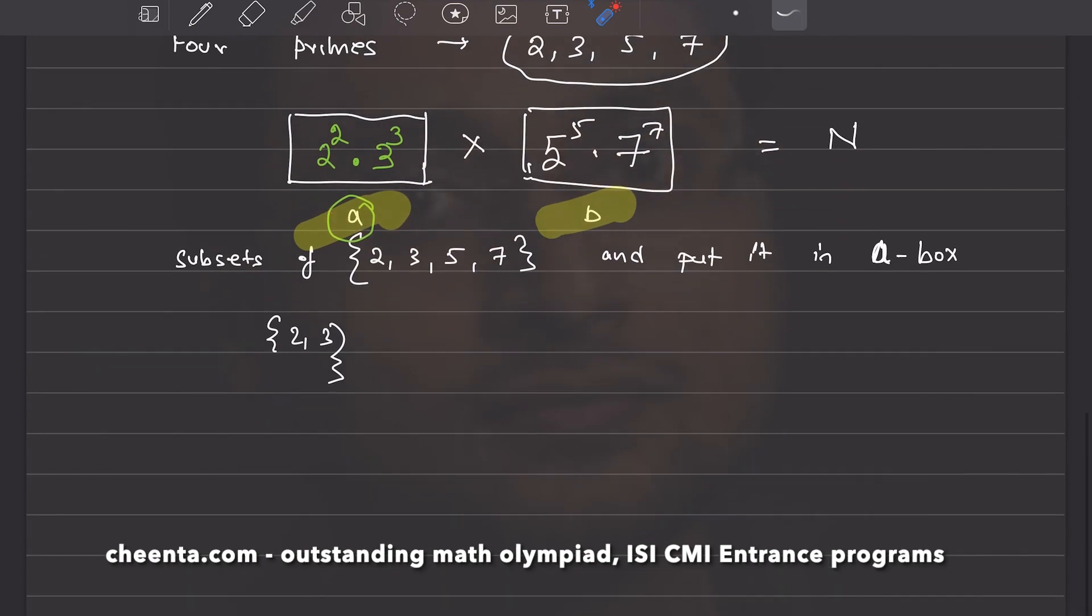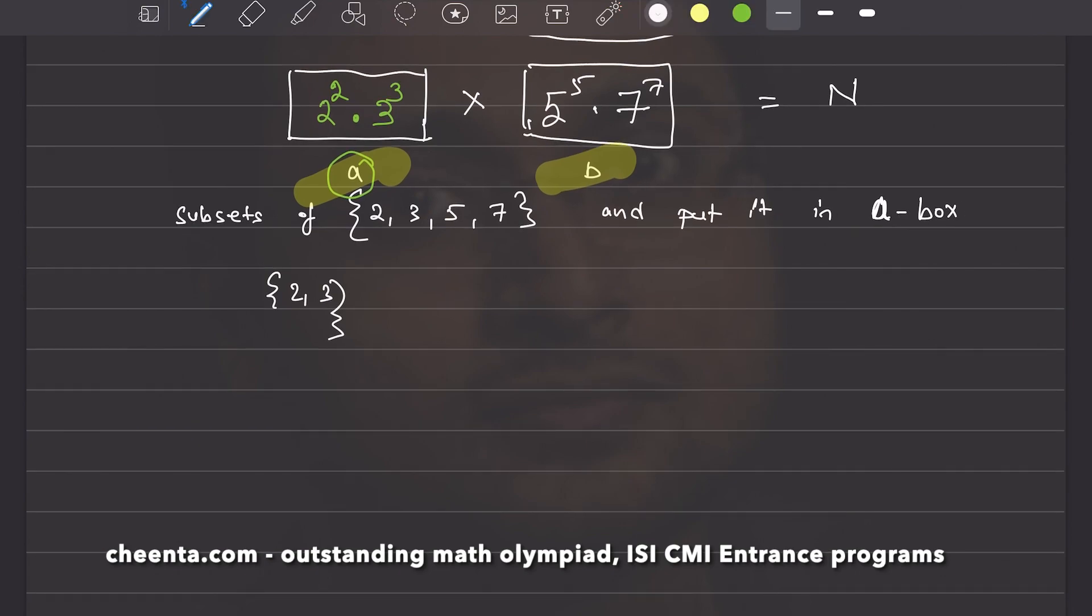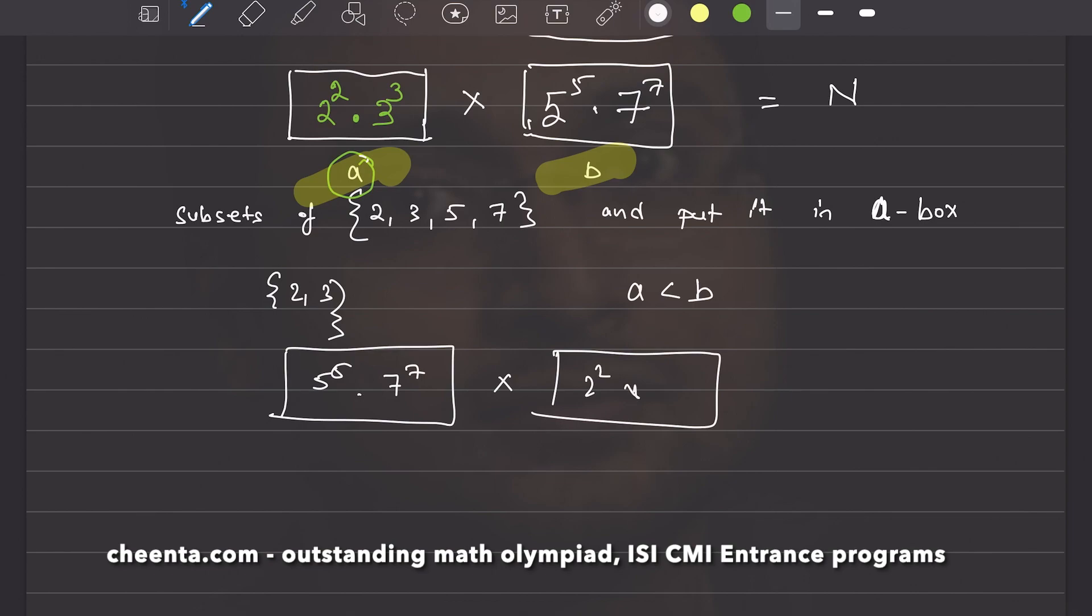There is one thing, though, which one is larger. I want a to be smaller than b. So, I have to be a little bit careful here. But that's very easy because every time you do this, you could have also done the opposite thing. Five raised to five, seven raised to seven. Two raised to two, three raised to three. So, this could be my a and that could be my b.